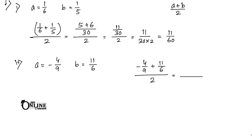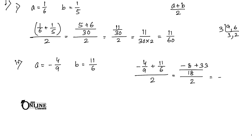The LCM of 9 and 6: 3 goes into 9, and 3 goes into 6, so LCM = 18. So it becomes (-8 + 33) / 18, divided by 2 — that is 25/18 ÷ 2 = 25/36. So 25/36 is your answer.